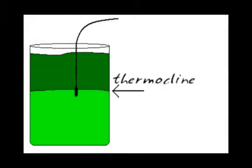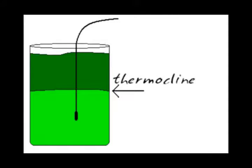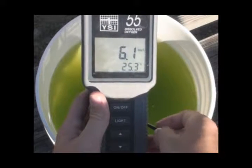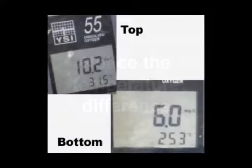If we lower the probe to the bottom of the bucket, representing the cooler, deeper pond water, lower dissolved oxygen levels are seen. Pay careful attention to the temperature readings in the lower right portion of the meter.